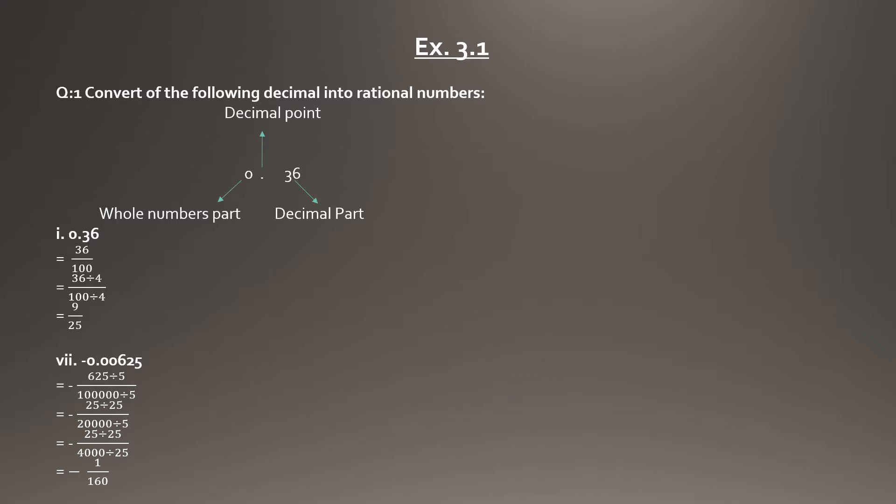A rational number is written in the form of a fraction, with a numerator over a denominator. The number 0.36 has a whole number part, which is 0, and after the decimal point we have 36. The digits before the point form the whole number part, and what comes after is the decimal part.